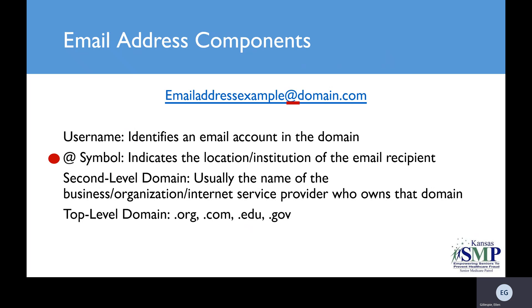Next is the at symbol. It indicates the location or institution of the email recipient. After that is the second level domain, which is usually the name of the business, organization, or internet service provider who owns that domain. Gmail, Yahoo, and Outlook would be a few examples of those.